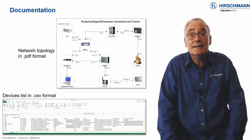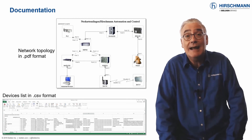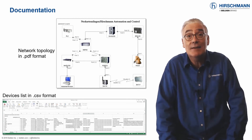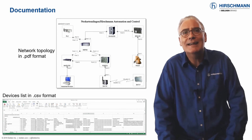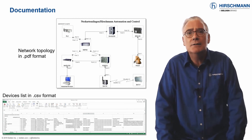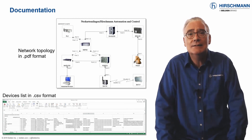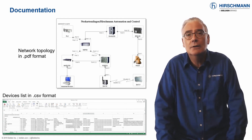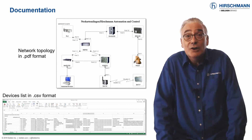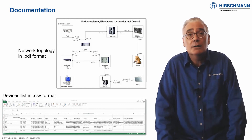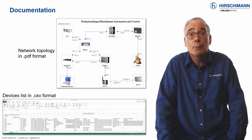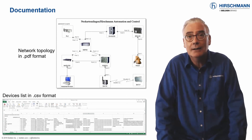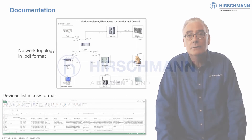Alternatively, the data can be exported as a CSV file, which is the most convenient and flexible format to be inserted into your documentation. You must document your network, and Industrial HiVision offers you an effortless way to complete the task quickly.